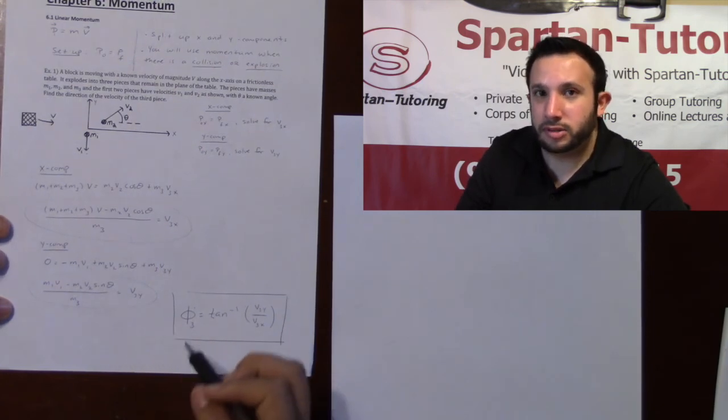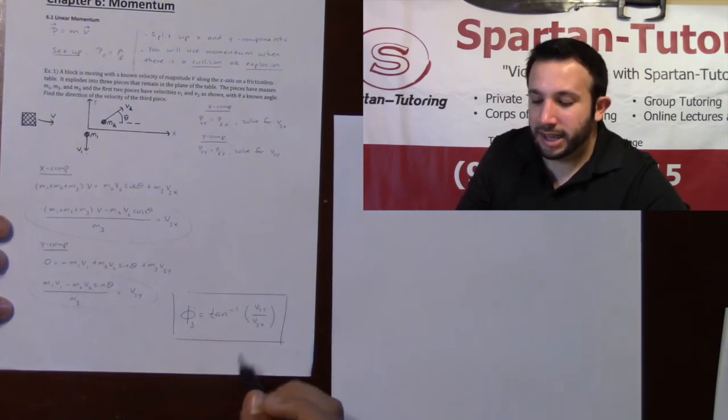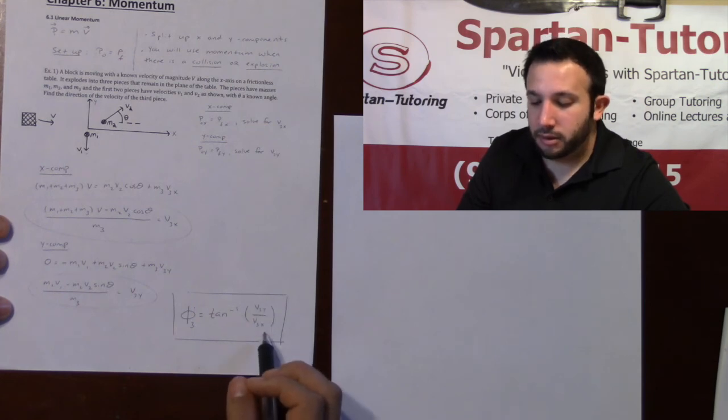And then finally, if you want to find the direction at which it's going, just do the arc tangent of your opposite over your adjacent.